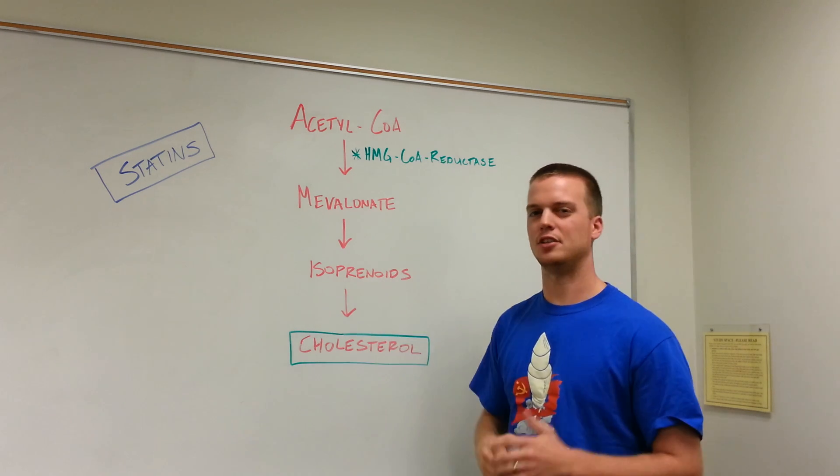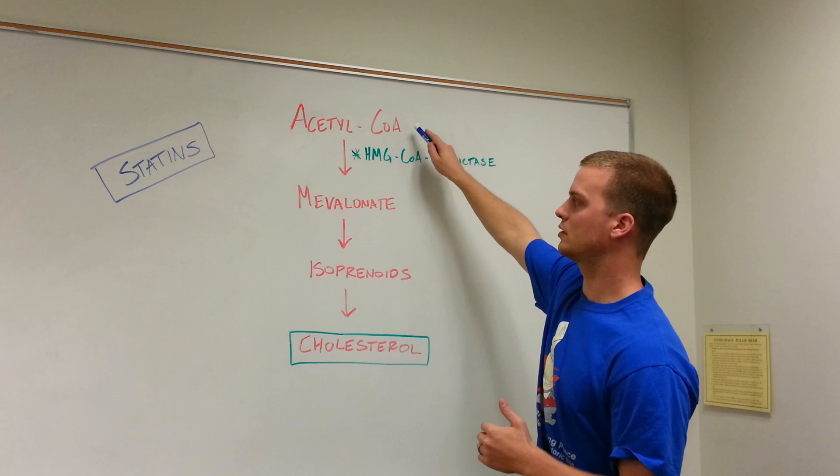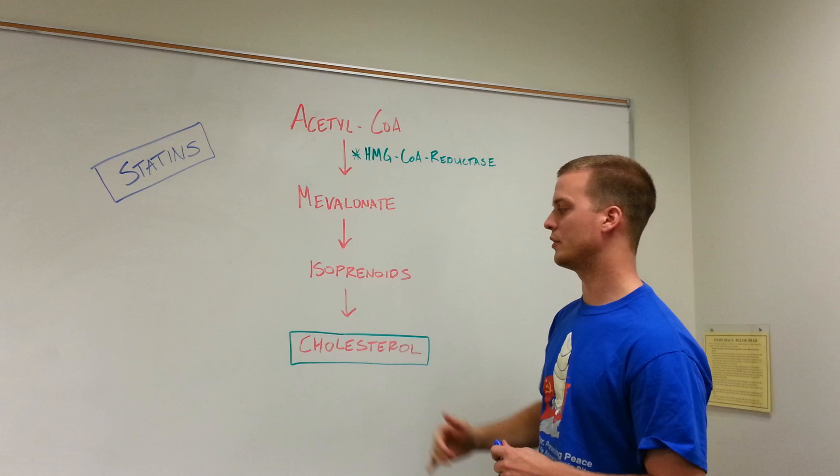Here you can see in red, I've kind of outlined the general overall process of how we make cholesterol inside our bodies. It starts with acetyl-CoA, you go down through the mevalonate, isoprenoid units, and it gives you cholesterol.